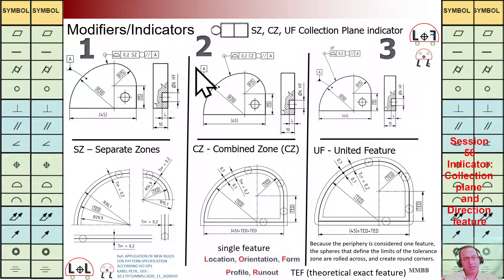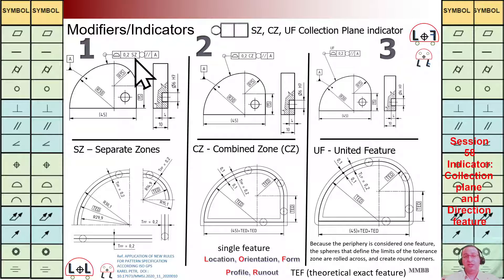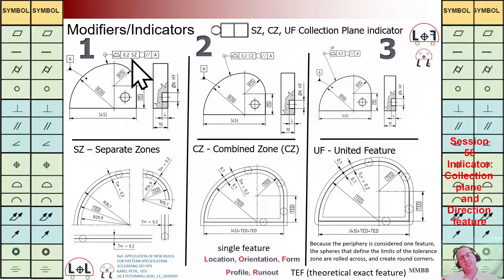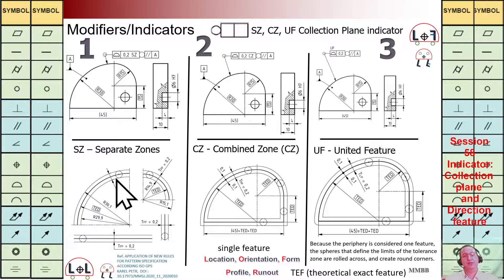Now let's see example number one: we are going to have profile surface, TZ is 0.2, and then we have SZ — separated zones — and here we have all-around parallel to A. Here A is the reference plane. All-around means all cross sections for different planes parallel to A. But here with SZ — separated zones — we are going to have four different features that are separated. For each of them we are going to have this TZ of 0.2.